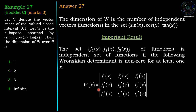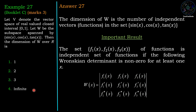So first we try to find the Wronskian of sin x, cos x, and tan x. If these three are independent, then the rank of the matrix is 3. If not, we find the number of independent vectors, giving a possible answer of 1, 2, or 3 — not infinite. The fourth option is already cancelled.